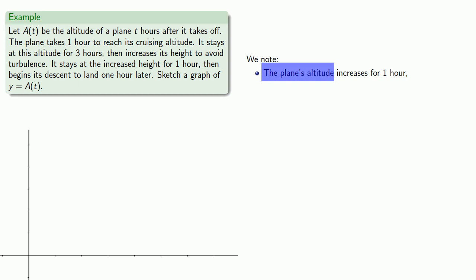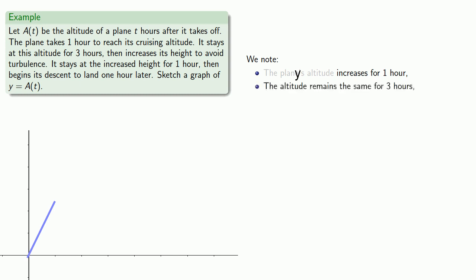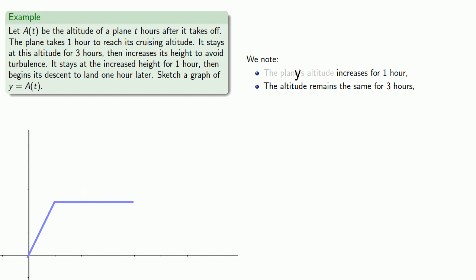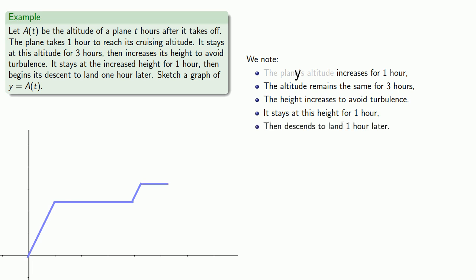The plane's altitude increases for an hour as it climbs to cruising altitude. The altitude is the function a of t, and in our graph a of t is the y value. So the y values increase for the first hour — as we go right, we go up. The altitude remains the same for three hours, so as we go right, the y values stay the same. Then the height increases to avoid turbulence, it stays at this increased height for an hour, then descends to land one hour later.